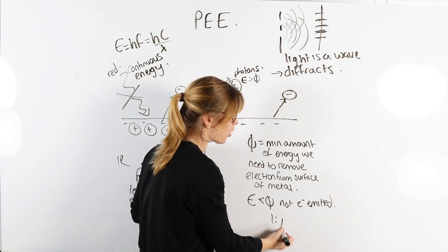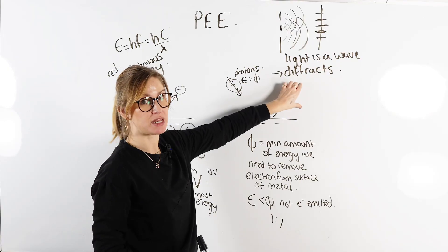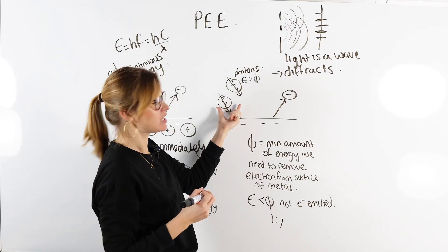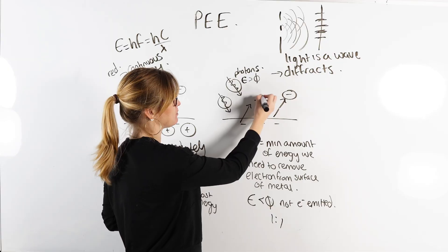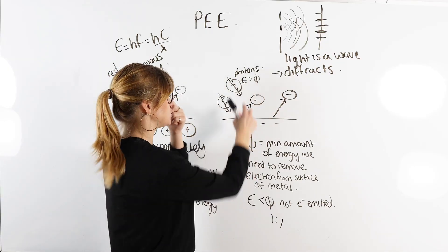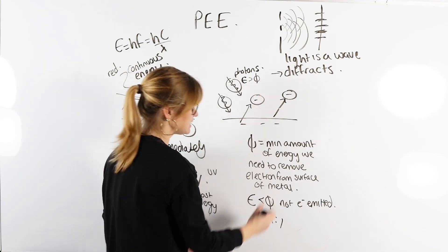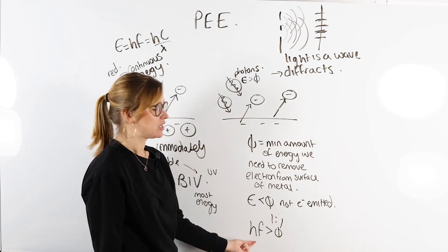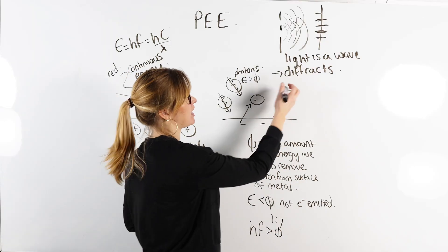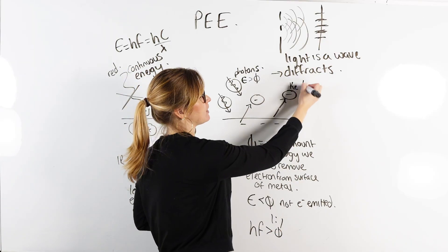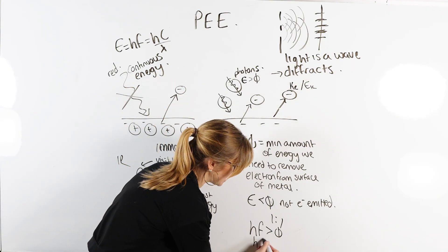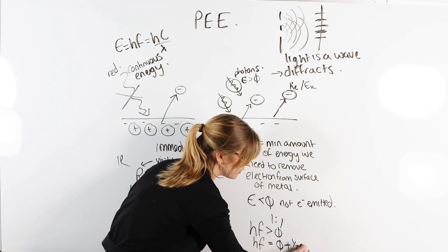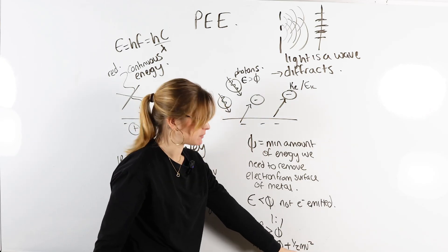It's a one-to-one interaction: one photon will cause one electron to be emitted. If we have another photon — a packet of electromagnetic energy — we get another electron emitted, provided its energy is greater than the work function. Mathematically, the energy of light equals HF. If it's greater than the work function, an electron is emitted. That electron carries away the extra energy as kinetic energy, written as Ek or one-half m times v squared — the mass of the electron times the speed it comes off with squared. So: HF = work function + ½mv².